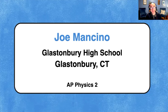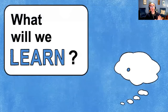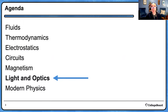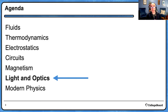I'm Joe Mancino, and I teach at Glastonbury High School in Glastonbury, Connecticut. I'm also the high school co-chair of the AP Physics 1 Development Committee, but we're here today to talk about optics. So far we've had a chance to talk about fluids and thermodynamics, electrostatics and circuits. I worked with you last session on magnetism. Tomorrow we'll be working through modern physics, and I'll hand it off to Strotterman to get you ready for the test in May.